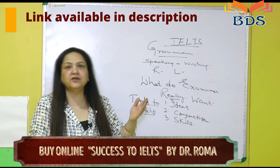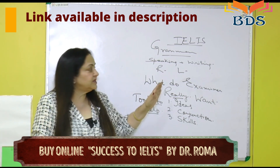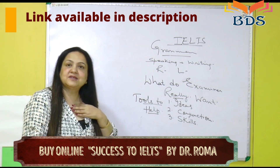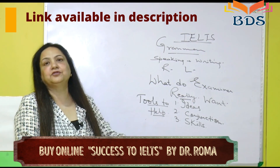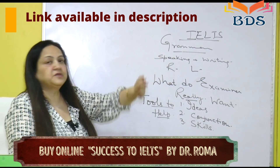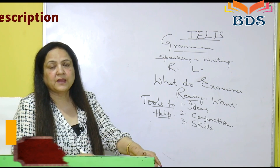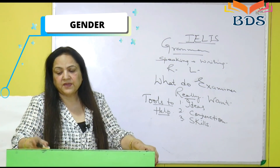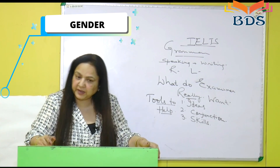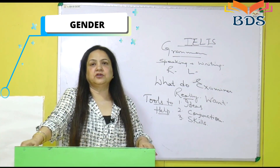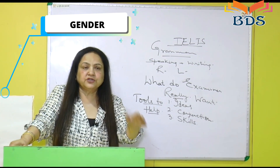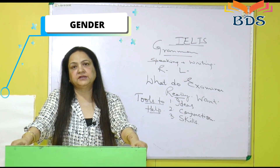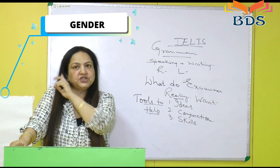Singular ke saath kya aata hai aur plural ke saath kya aata hai — this should be clear to you. This basic clarity will allow you to pick up speaking with confidence. The second thing to identify is gender. This is very common — under pressure, students commit mistakes. Write on the card: 'he hai' or 'she hai.'